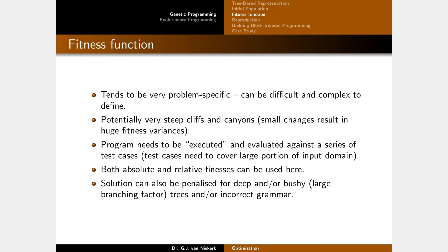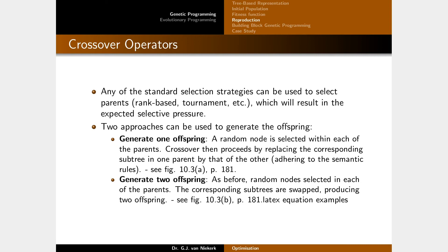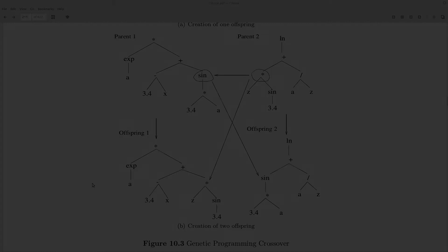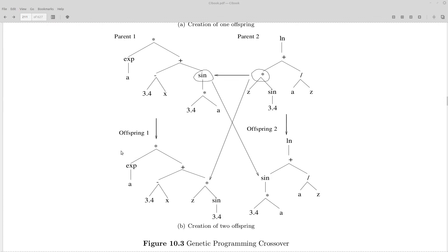For crossover operators, any of the standard selection strategies can be used. There are typically two approaches to generate offspring. For example, with the problem of evolving mathematical expressions, you select a random node in both parents and swap those subtrees. So the subtree rooted at multiply is placed on one side and the subtree rooted at sin on the other side — you simply swap those two subtrees in the offspring.